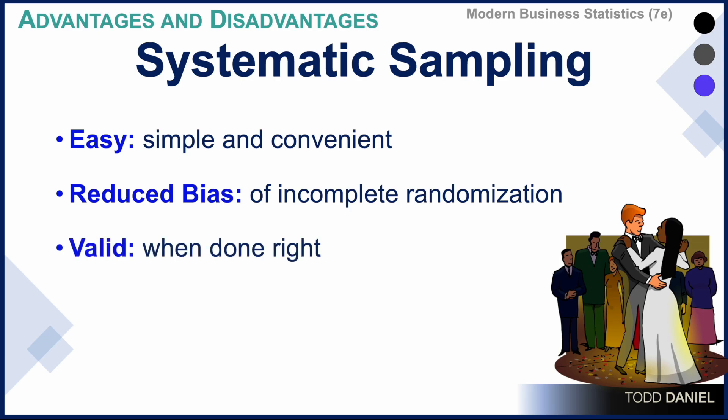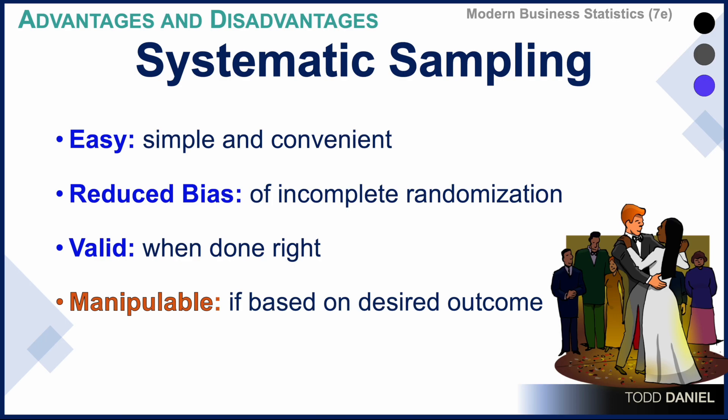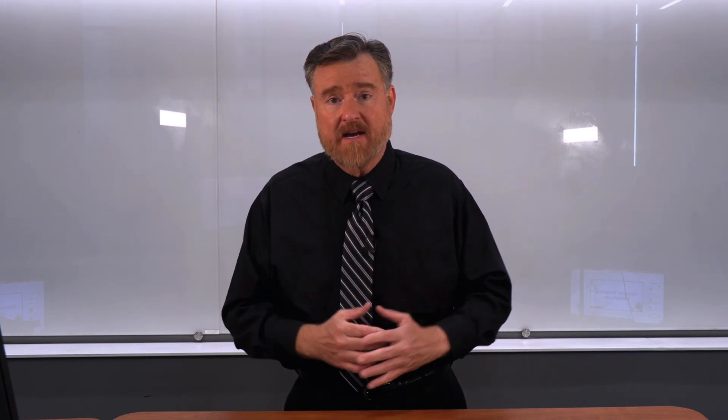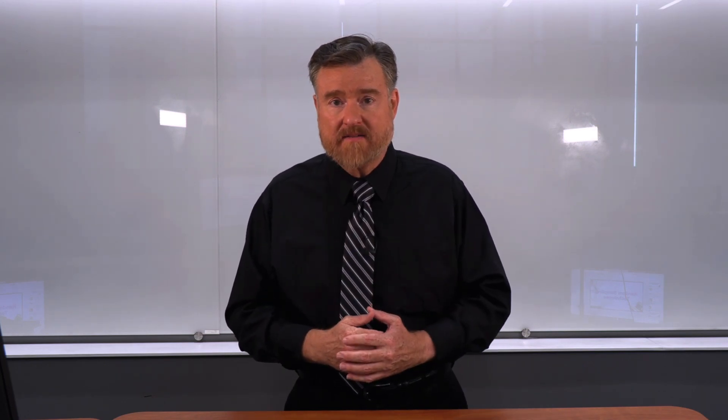Systematic sampling is a valid way of getting a random sample when done correctly. However, systematic sampling is susceptible to manipulation. If someone wanted a specific outcome, they might be able to manipulate the data sufficiently to get the desired outcome in the sample.